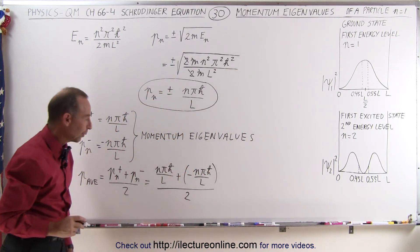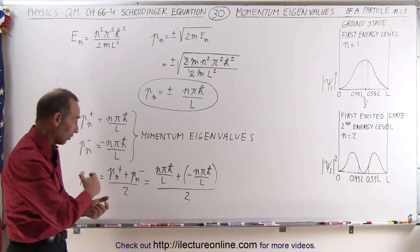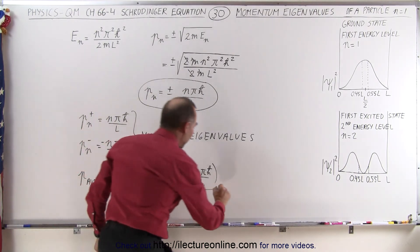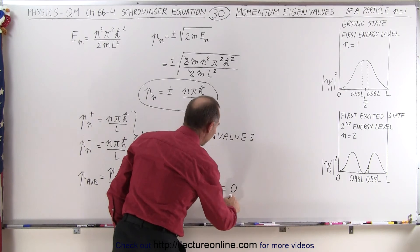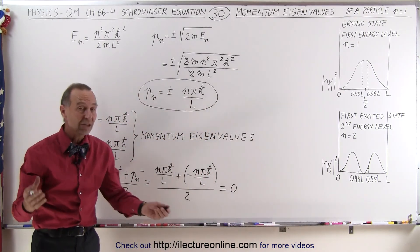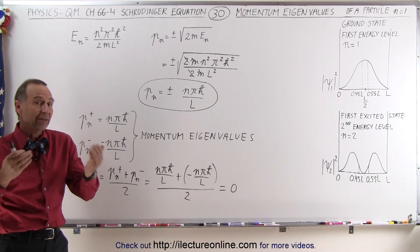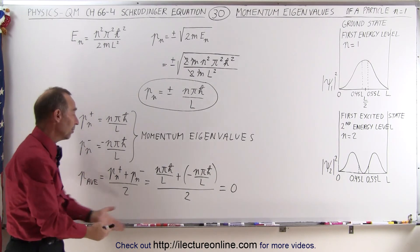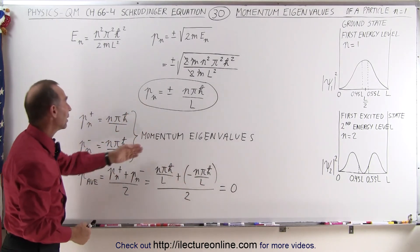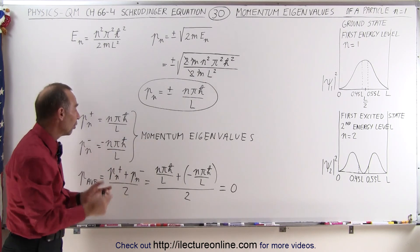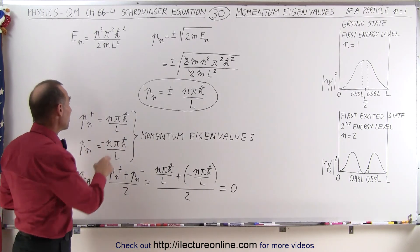And of course right away you realize when you add those two together, since one is positive and one is negative, you end up with zero which is also going to be the expectation value for the momentum. So you can see that the expectation value by definition is the average momentum which is going to be zero and here are the momentum eigenvalues which gives you the magnitude of the momentum,